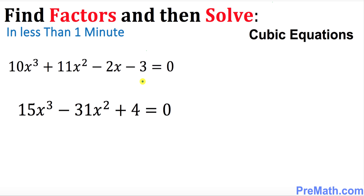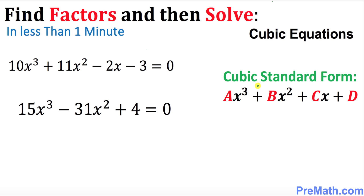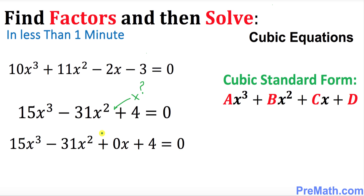Before we get started, we want to make sure that our given cubic equations are in standard form. Our cubic standard form looks like the one on the right-hand side. In the second equation, the x variable is missing. So wherever you see a missing x term, we put down zero times x.